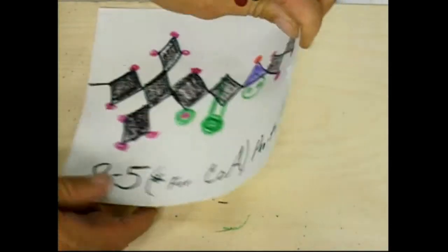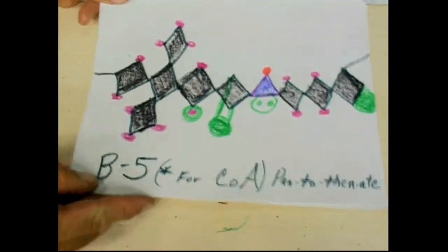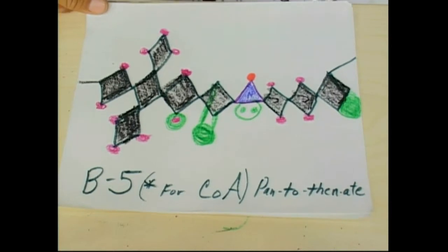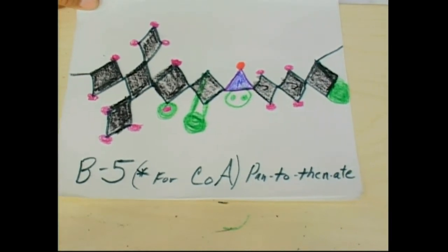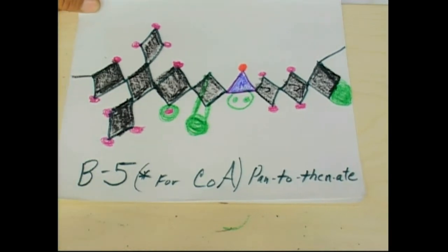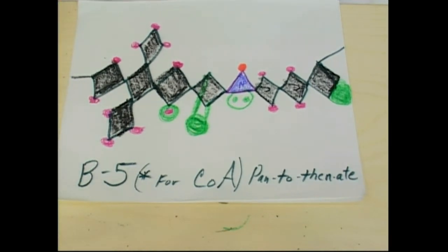That is the whole vitamin B5 structure. Now we drew it the other way but it doesn't matter. Look how simple that is. That is real university level chemistry, kids, I kid you not. Look at the confidence that you got now. So when this forms acetyl coenzyme A, it gets a side group off. Here we'll just draw that on the back.